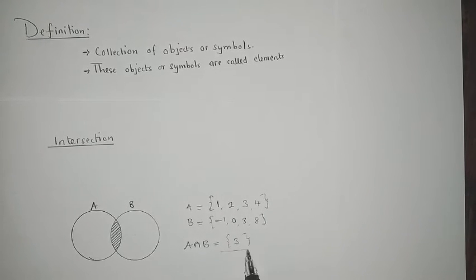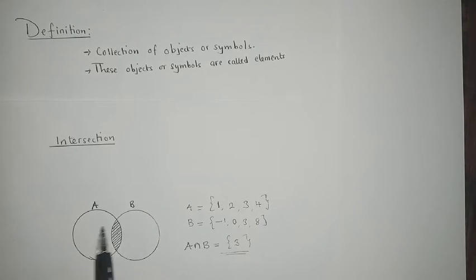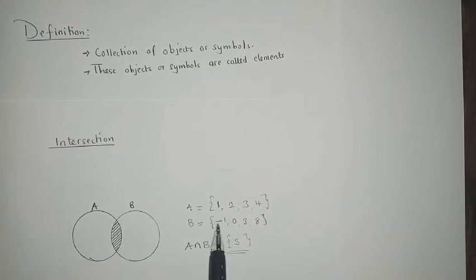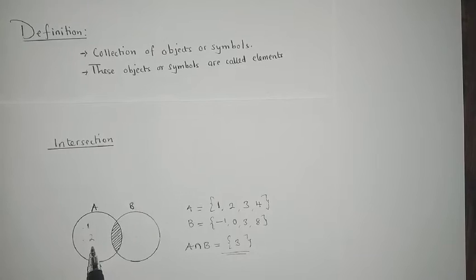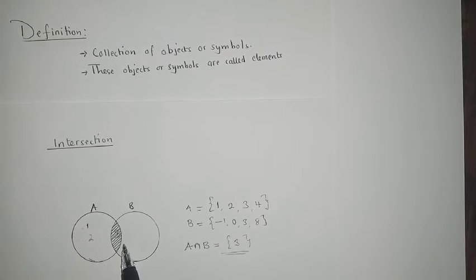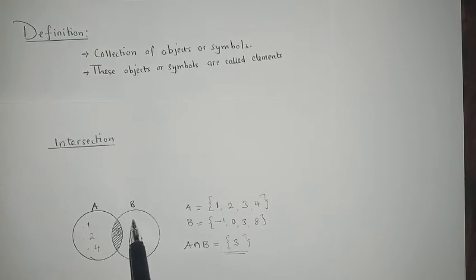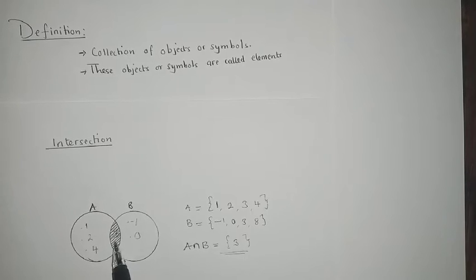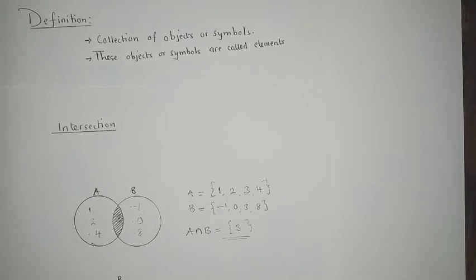Let's place these in a Venn diagram. Set A contains 1, 2, 4, and 3 goes in the middle because it's common. For set B: -1, 0, and 8 go in B's region, while 3 is already in the center. This is how you represent the intersection in a Venn diagram.